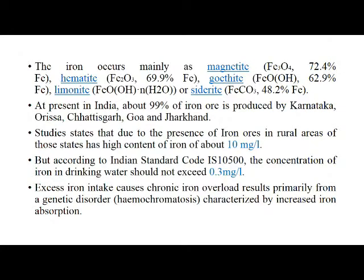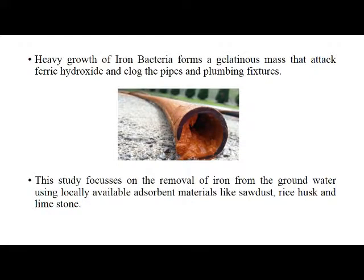Iron occurs mainly as magnetite, hematite, geotite, limonite, or siderite. At present in India, about 99% of iron ore is produced by Karnataka, Orissa, Chattisgarh, Goa, and Jharkhand. Studies state that due to the presence of iron ores in rural areas of those states, there is a high content of iron of about 10 mg per litre. But according to Indian standard code, the concentration of iron in drinking water should not exceed 0.3 mg per litre. Excess iron intake causes chronic iron overdose, resulting primarily from a genetic disorder characterized by increased iron absorption.